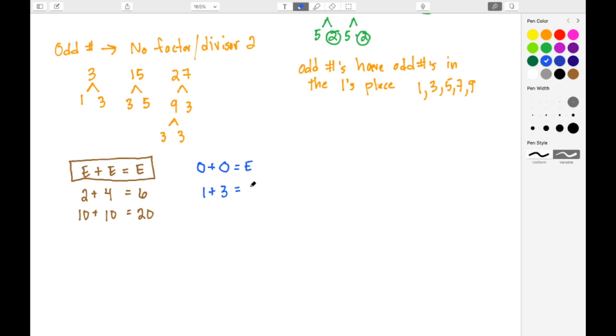1 plus 3 gives us 4, and another example, 5 plus 7 gives us 12. So here we have odd numbers being added together, so their sum or total is going to result in an even number.